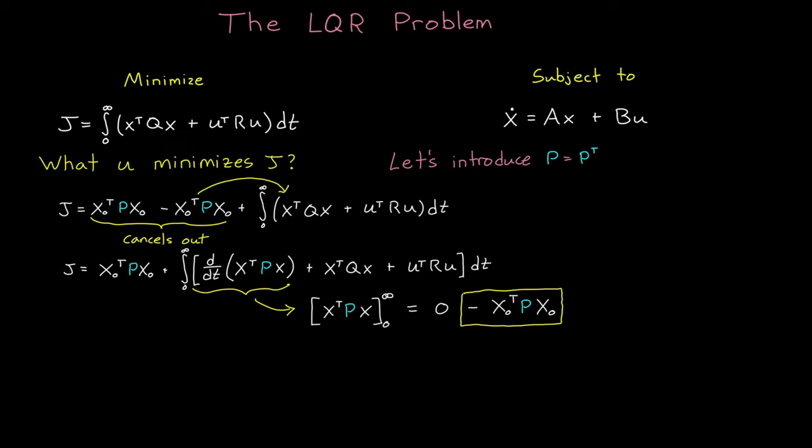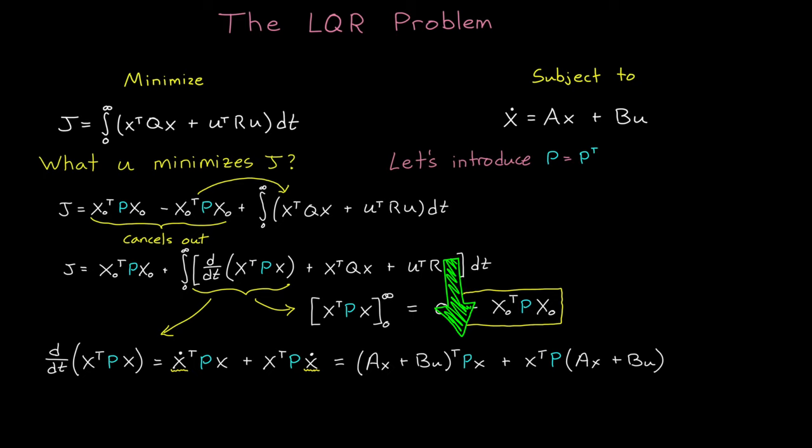All right, now let's just look at this derivative we added and expand it to get x dot transpose P x plus x transpose P x dot. And you might be asking, well, how did this help? Well, we know what x dot is. It's from the state equation. It's our constraint. So we can plug in x dot, which then gives us this equation for the derivative term, which we can now plug back into our original cost function.